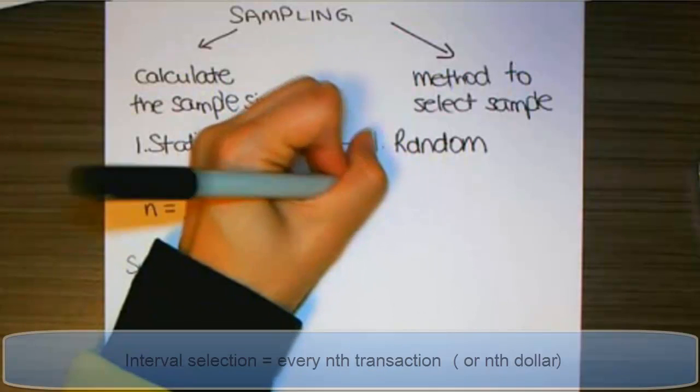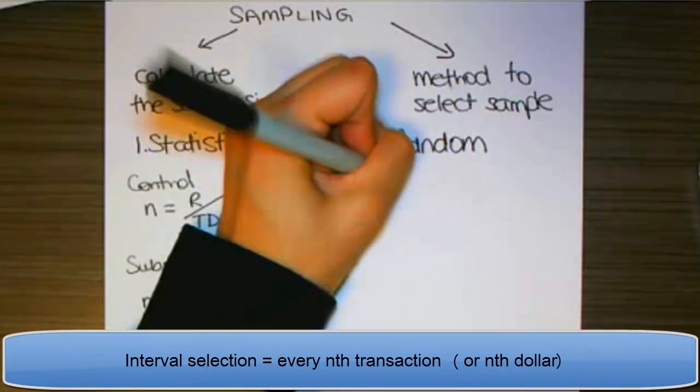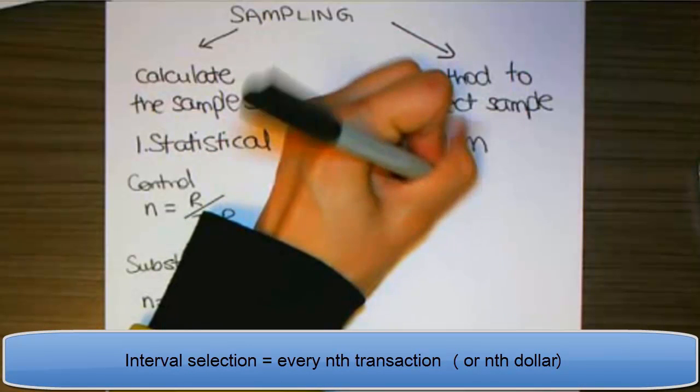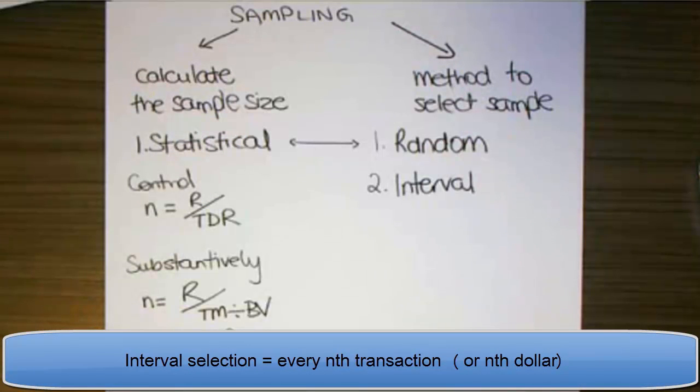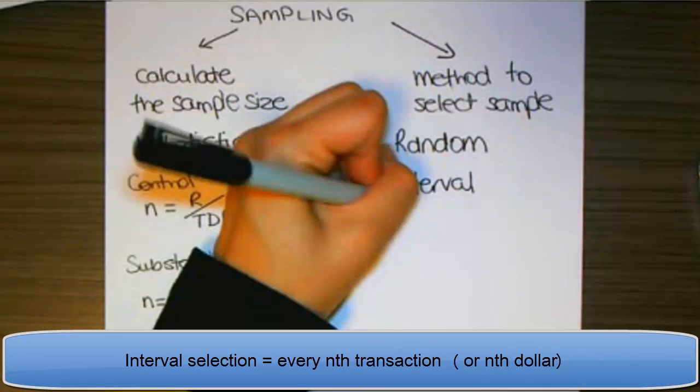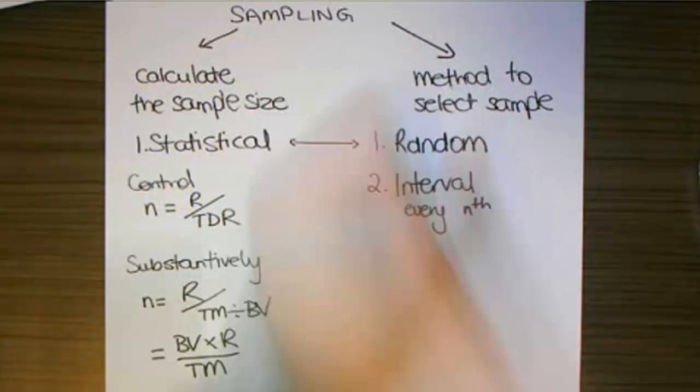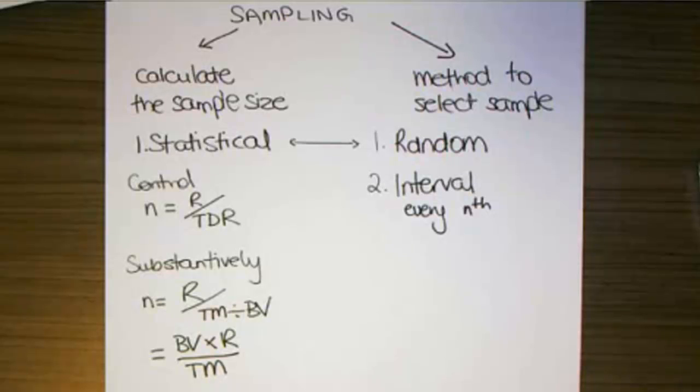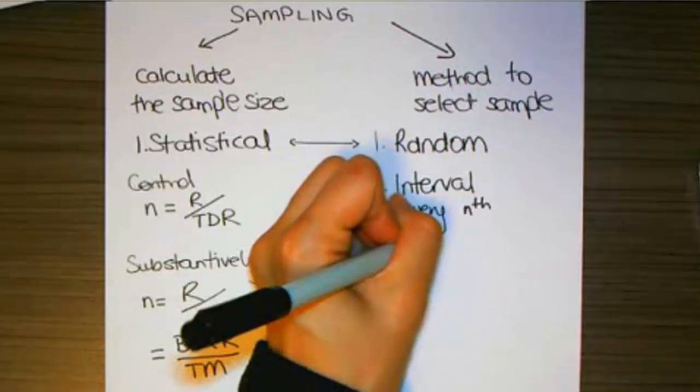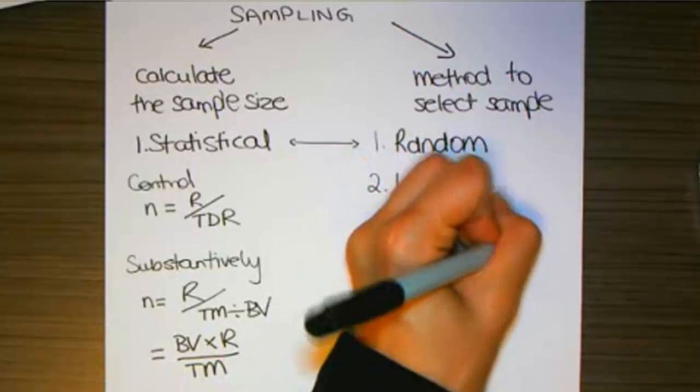The other option, option two, is often called interval sampling. So interval involves collecting every nth transaction. So that might be every 200th, every 150,000th, in equal sequence.